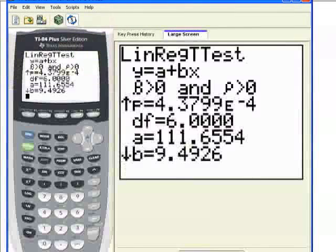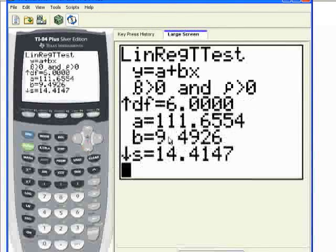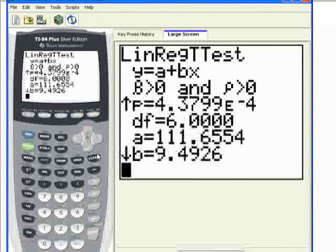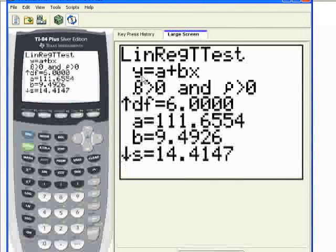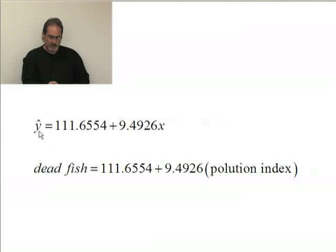What else do we have here? When we look at the calculator, we have values for A and B. You can see it's using the equation Y equals A plus BX. So A is what we think of as B0 and B is what we think of as B1. The y-intercept is 111.6554 and the slope is 9.4926. This is for the sample regression line. So what that means is we actually have a model that looks like Y hat equals 111.6554 plus 9.4926X.